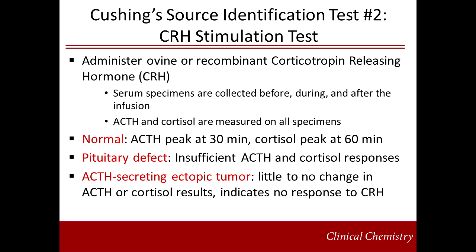To further evaluate the source of the defect in Cushing's, a CRH stimulation test may be employed, in which ovine or recombinant human corticotropin-releasing hormone is infused, and ACTH and cortisol are measured at baseline, during, and after the infusion. In a normal response, ACTH and cortisol will rise and peak at 30 and 60 minutes, respectively. However, if the pituitary is the source of the defect, ACTH and cortisol — which are already elevated — respond with an insufficient elevation. Finally, if the defect is due to an ectopic ACTH-secreting tumor, there is no significant response of ACTH and cortisol to CRH.